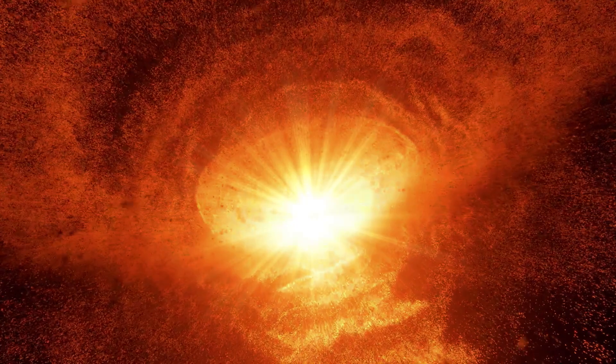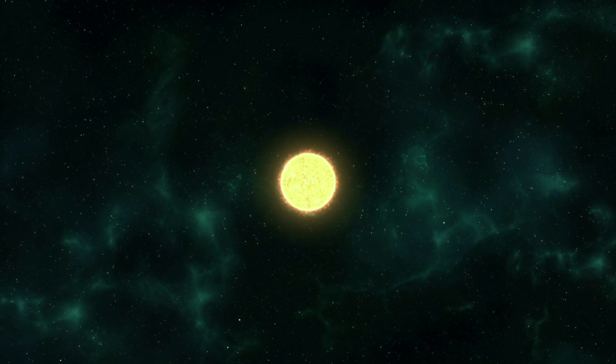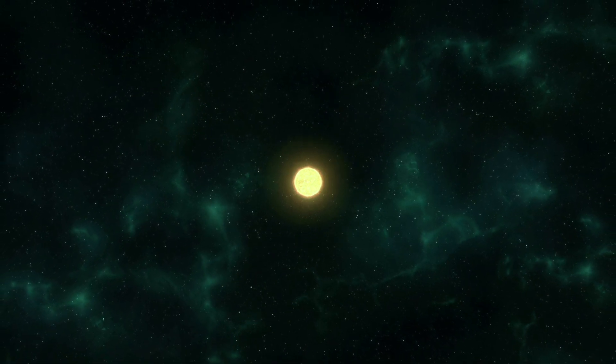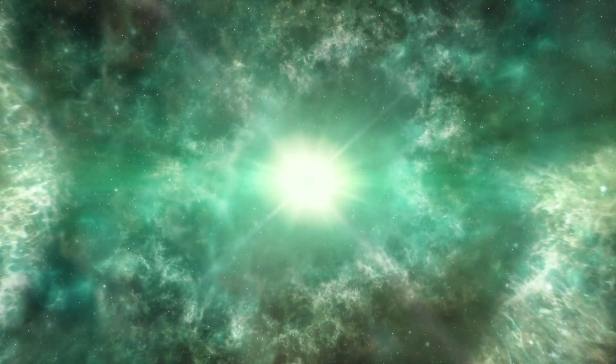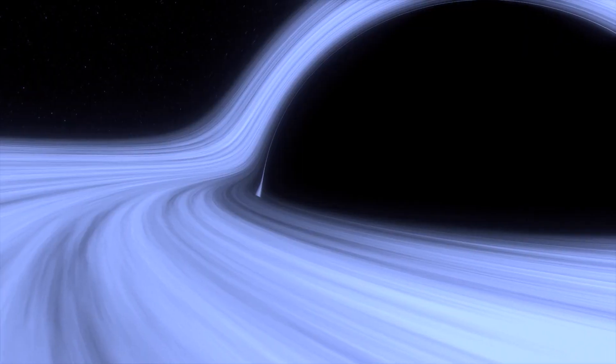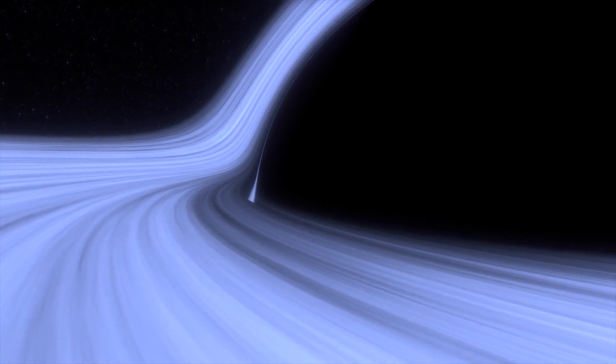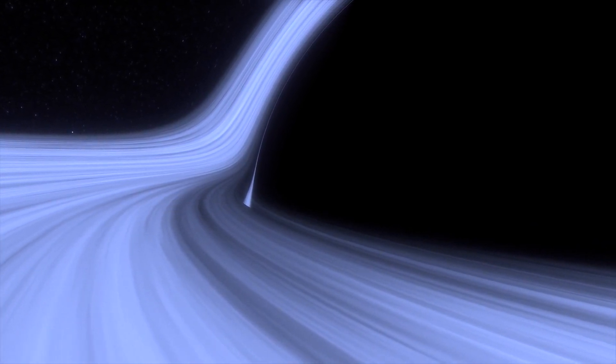The gravitational collapse also generates a tremendous amount of heat and energy, which is released in the form of a supernova explosion. This explosion can be so bright that it outshines entire galaxies and can be visible from Earth. Once the explosion has subsided, what remains is a black hole, which continues to exert its gravitational pull on surrounding matter.